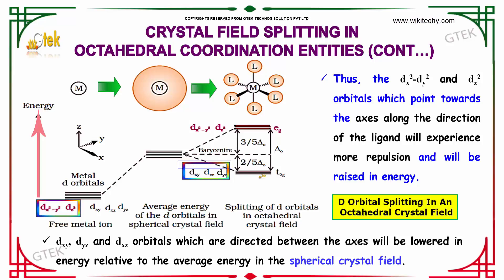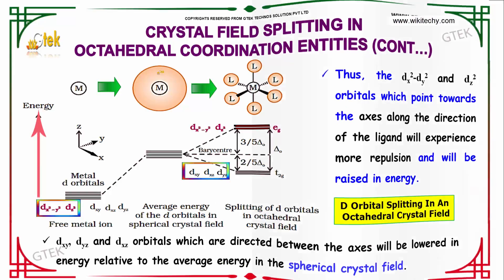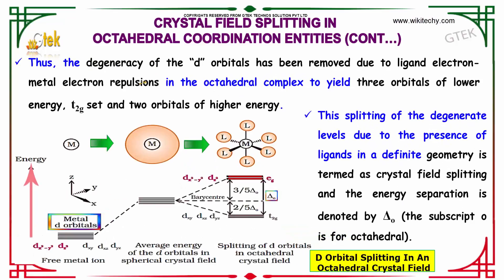Whereas the dxy, dxz, and dyz orbitals, which are directed between the axes, will lower in energy relative to the average energy in the spherical crystal field. Thus, the degeneracies of the d-orbitals have been removed due to the ligand electron-metal electron repulsion in the octahedral complex, yielding three orbitals of lower energy (t2g) and two orbitals of higher energy (eg).